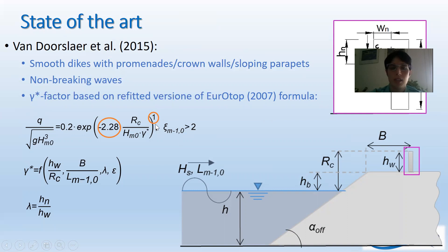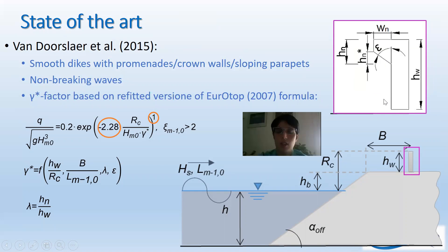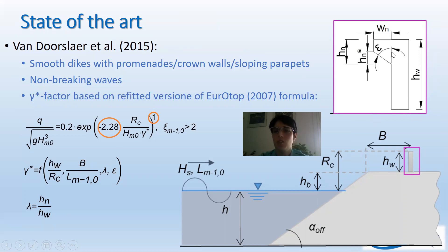The EurOtop 2007 formula is characterized by a coefficient of 1 at the exponential. Their work consists in a series of formulations of gamma star to represent the effects of the wall height through the parameter H_wall divided by the total freeboard R_c, the effect of the berm or promenade through B divided by the wavelength L, lambda which is the ratio between the parapet height and the wall height H_w, and epsilon which is the inclination angle of the parapet.